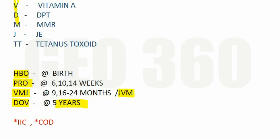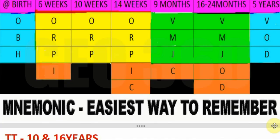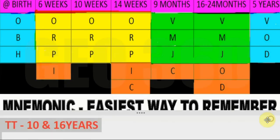After completing the months you come to the years. At 5 years you give DAO — it's a soap name. In DAO, D stands for DPT vaccine, O again stands for oral polio vaccine, and A stands for vitamin A. In this way you can easily remember the immunization schedule.